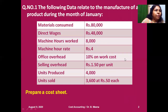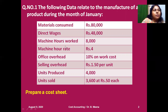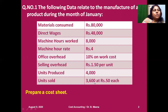The question is: from the following data relating to the manufacture of a product during the month of January — materials consumed ₹80,000; direct wages ₹48,000; machine hours worked 8,000 hours; machine hour rate ₹4; office overhead is 10% on works cost; selling overhead is ₹1.50 per unit; units produced 4,000; units sold 3,600 at ₹50 each.